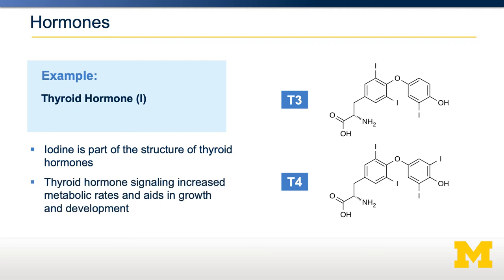Having functional thyroid hormone signaling is important for supporting our metabolic rate and for growth and development. People who have thyroid deficiency are often at risk of excessive weight gain due to decreased metabolic rates. There are also several enzymes involved in reactive oxygen species detoxification. For example, glutathione peroxidase requires the cofactor selenium, and superoxide dismutase requires the cofactors manganese and copper. There are two different isoforms of superoxide dismutase: one manganese-specific and one copper-specific.